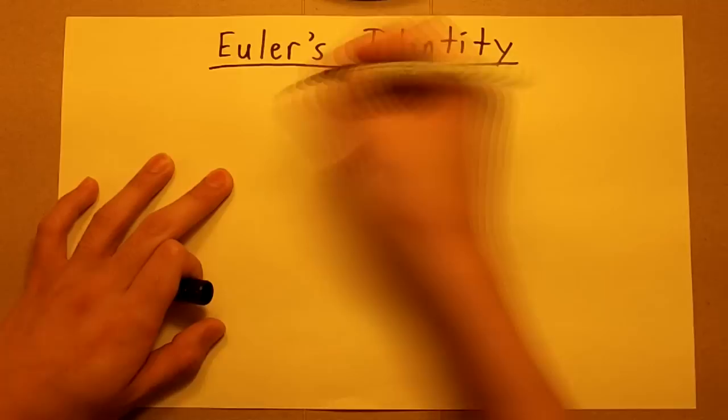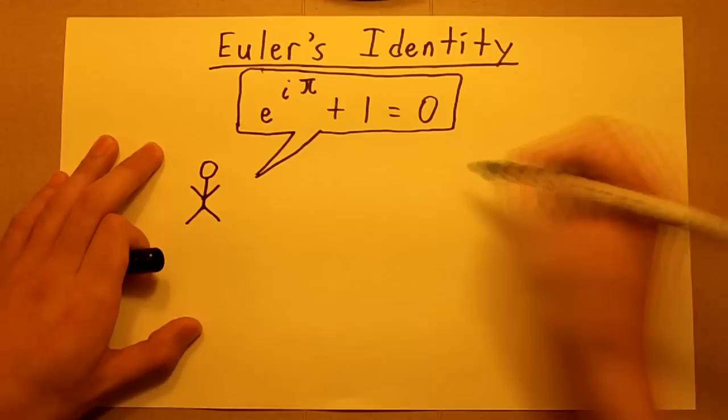Another obvious contender is Euler's identity. I mean, it is a bit trite, but what could possibly be more beautiful than relating together five fundamental mathematical constants?